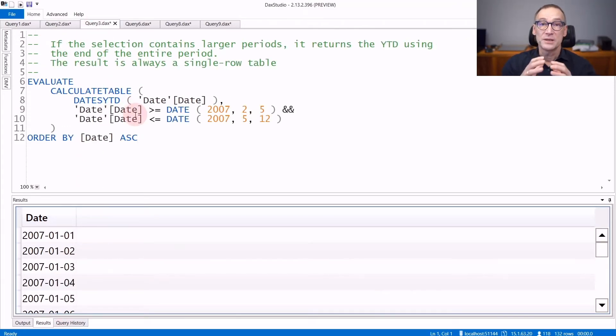If the selection contains a range, like in this case, I compute the DatesYTD starting from the 5th of February up to the 12th of May. The 5th of February is basically ignored. DatesYTD returns dates starting from the 1st of January up to the 12th of May. You see that we have the 1st of January and it goes up to the 12th of May.